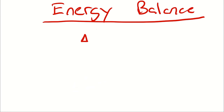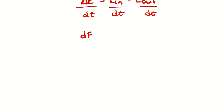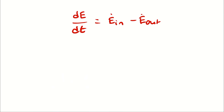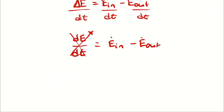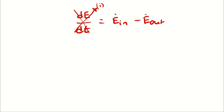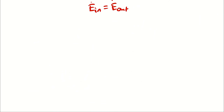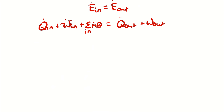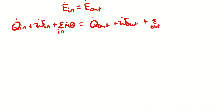Back in my energy balance, the change in energy of the control volume equals the energy entering minus the energy exiting. Dividing all three terms by dt, the rate of change of energy of the control volume is zero because of the assumption of steady state, which means E-dot-in equals E-dot-out. Since it's an open system, energy can cross the boundary in the form of heat, work, or the energy associated with the moving mass: Q-dot-in plus W-dot-in plus the sum of m-dot times theta for all inlets equals Q-dot-out plus W-dot-out plus the sum of m-dot times theta for all outlets.